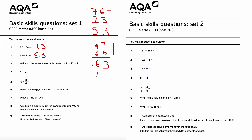Question number three: write out the seven times table from one times seven to twelve times seven. One times seven is 7, two times seven is 14, three times seven is 21, four times seven is 28, five times seven is 35, six times seven is 42.